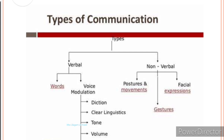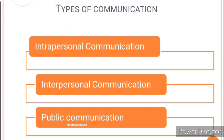Communication in the classroom occurs on three levels: intrapersonal communication, interpersonal communication, and public communication. We will now see the details about these three levels of communication.